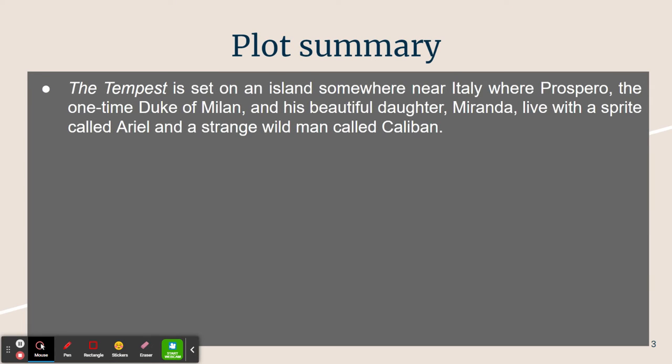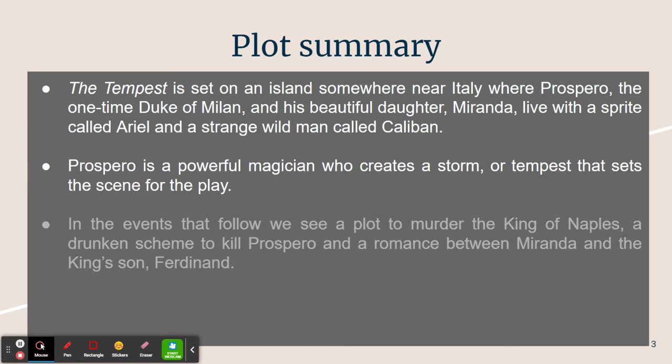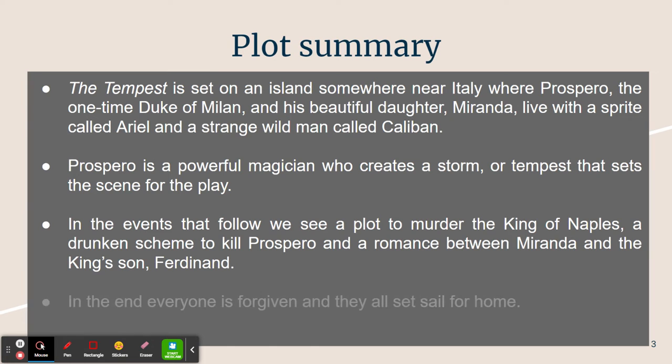That is a quick plot summary. The Tempest is set on an island somewhere near Italy, where Prospero, the one-time duke of Milan, and his beautiful daughter Miranda live with a sprite called Ariel and a strange wild man called Caliban. Prospero is a powerful magician who creates a storm or tempest that sets the scene for the play. In the events that follow, we see a plot to murder the king of Naples, a drunken scheme to kill Prospero, and a romance between Miranda and the king's son, Ferdinand. In the end, everyone is forgiven, and they all set sail for home.